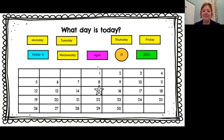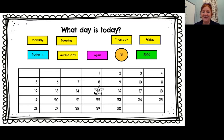Let's count our days in the month so far: one, two, three, four, five, six, seven, eight, nine, ten, eleven, twelve, thirteen, fourteen, fifteen. Fifteen — awesome!